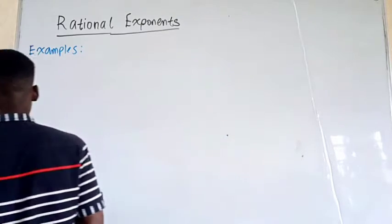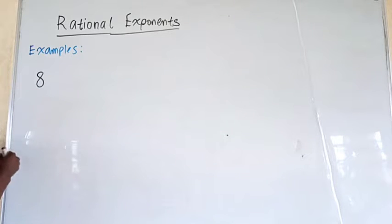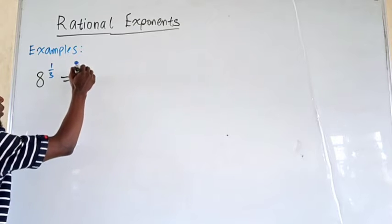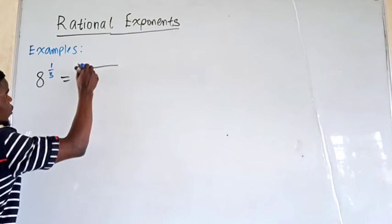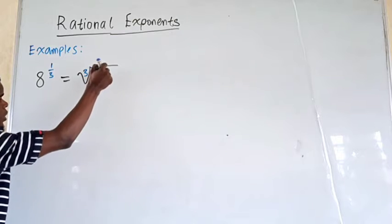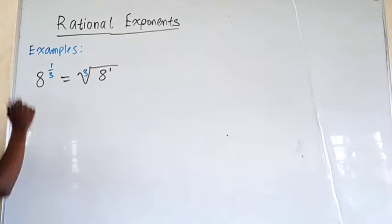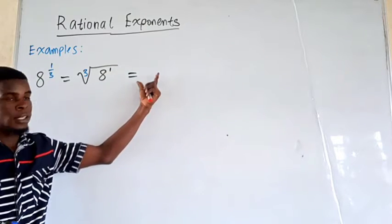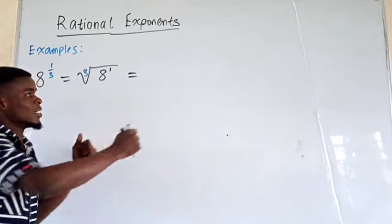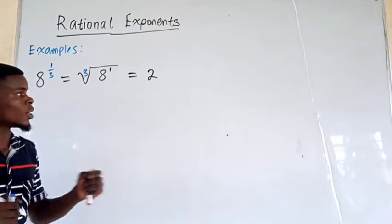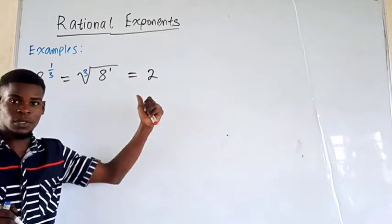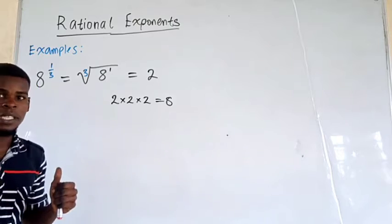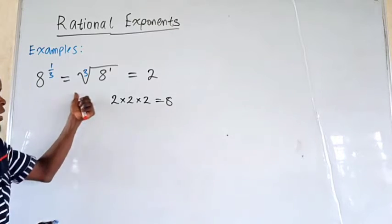Suppose we have 8 raised to the power of 1 over 3. This right here can be written as the cube root — so 3 enters there — and we have 8 raised to the power of 1, which just remains the same. What do you get? This is just 2, because 2 times 2 times 2 is 8. So the cube root of 8 is going to be 2.